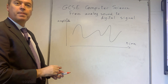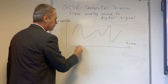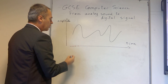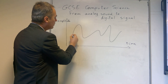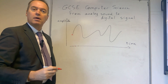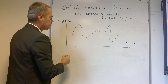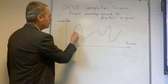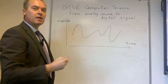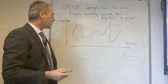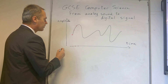At set intervals, you're going to take a sample of what the amplitude of the analog sound wave is at that moment in time, and then you repeat — taking another sample and another sample. These samples are going to be passed to your analog to digital converter.